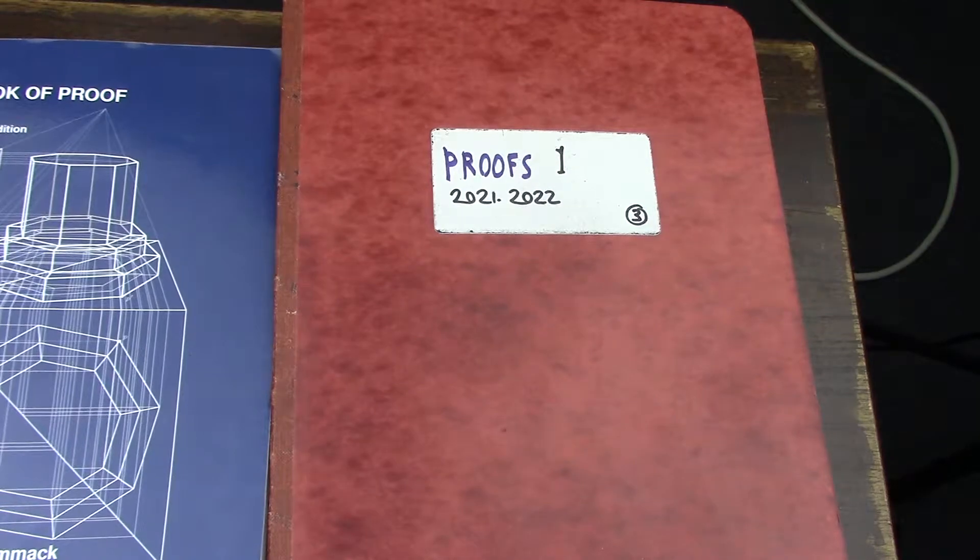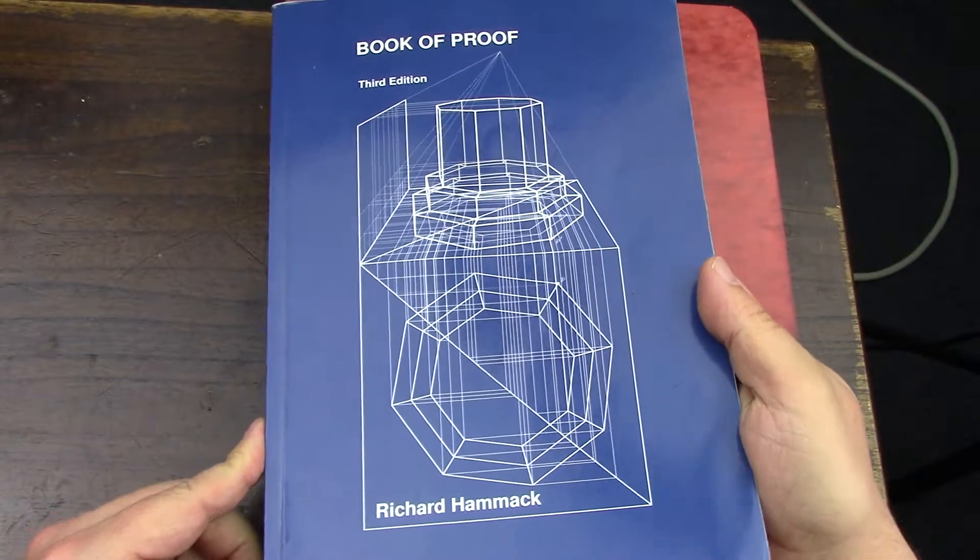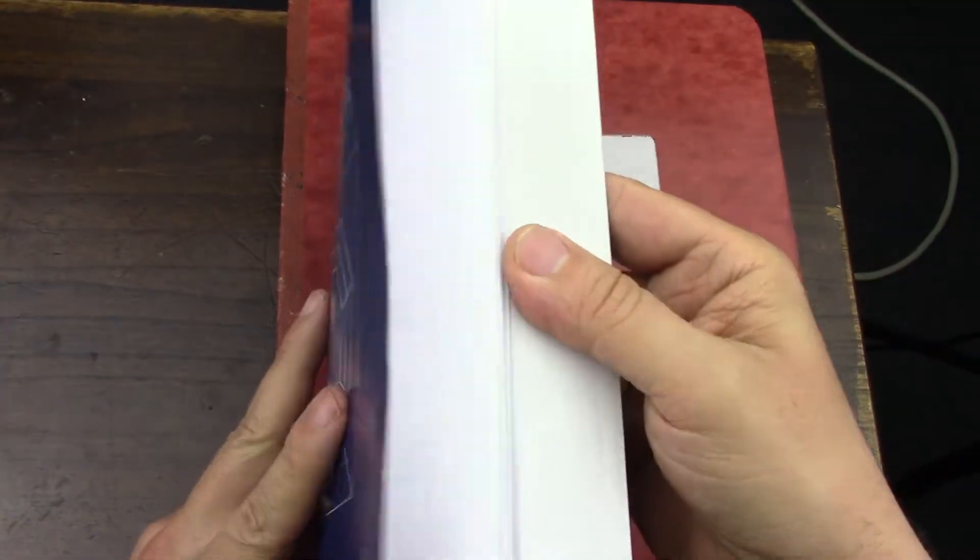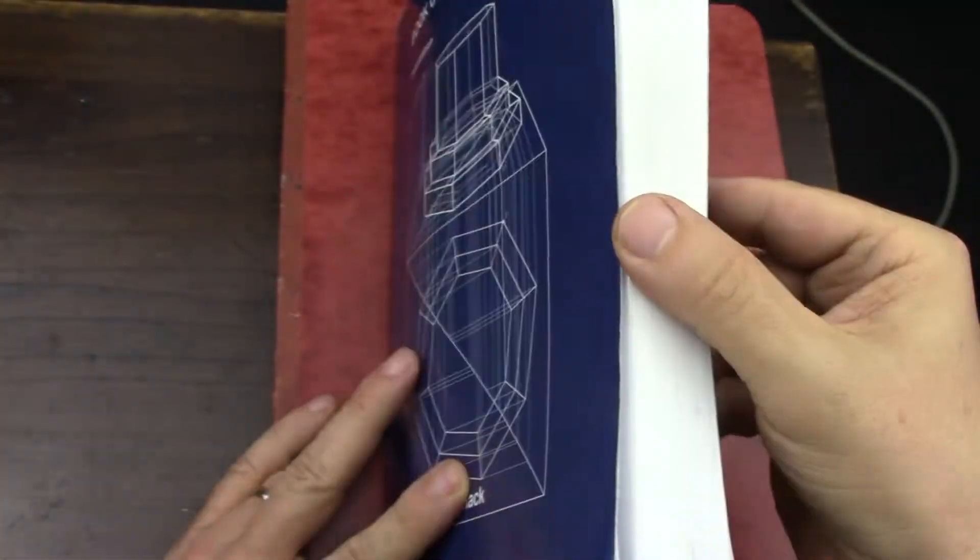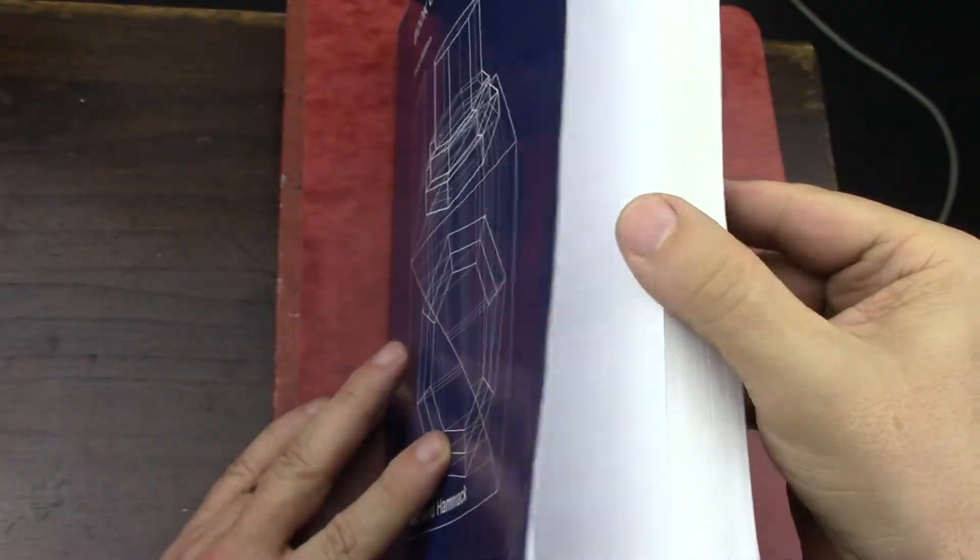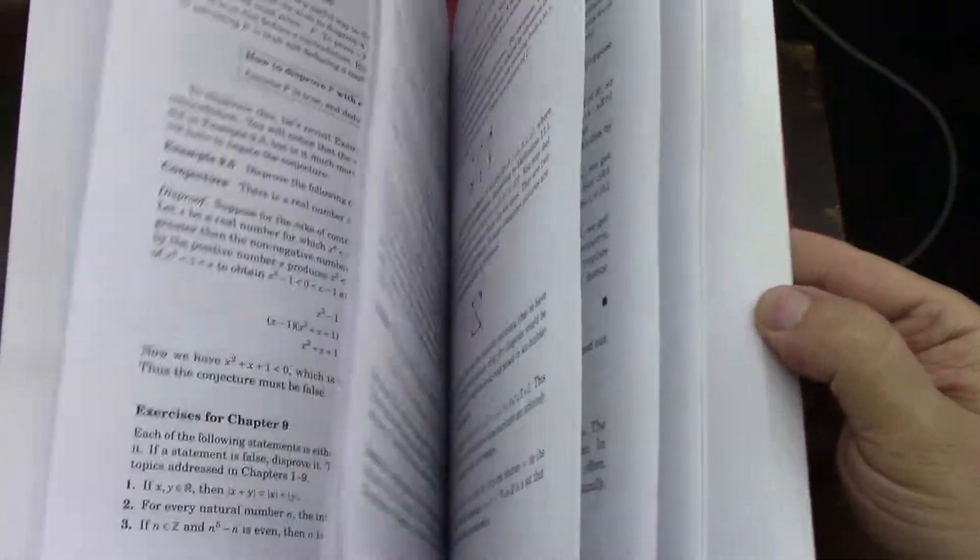Those three courses are Proofs One, Number Theory One, and Calculus One. Because this book is not as long as the Number Theory book or the Calculus book, I was able to cover the whole book cover to cover and do most of the problems.